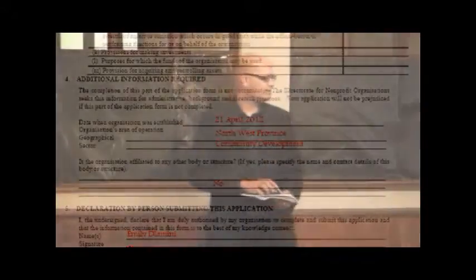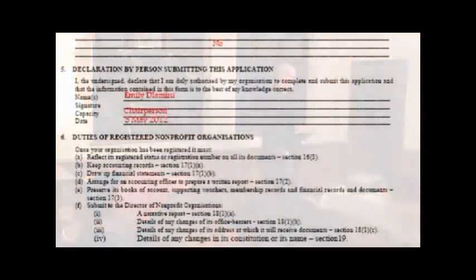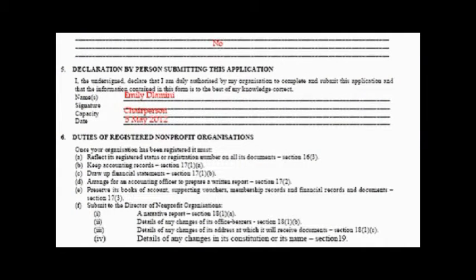The last page also talks about additional information: number one, the date when the organization was established — you must put that in. The area of operation you must also put in, and also the sector. So for example, if you're doing community development, business development, or paralegal services, that's what you put in. Is the organization affiliated to any other body — for example, Western Cape Paralegal Association? And then the person signing the form should be authorized to do so: you name the person, their capacity, and the date. That's what the application form is — it's fairly straightforward and not difficult to fill in.